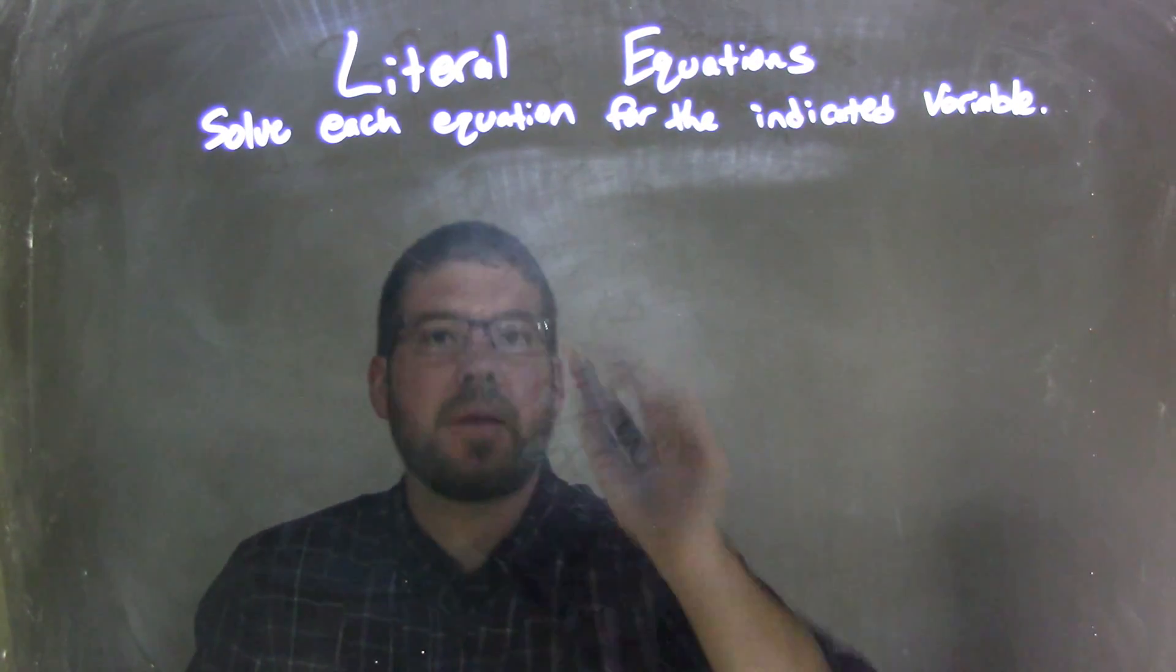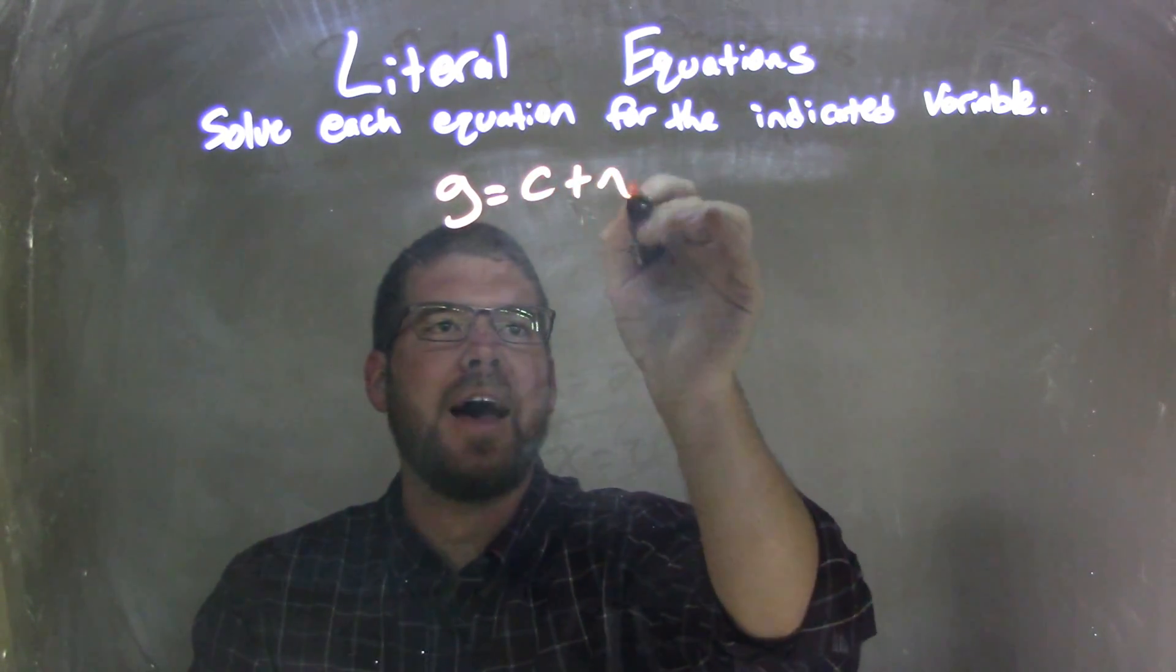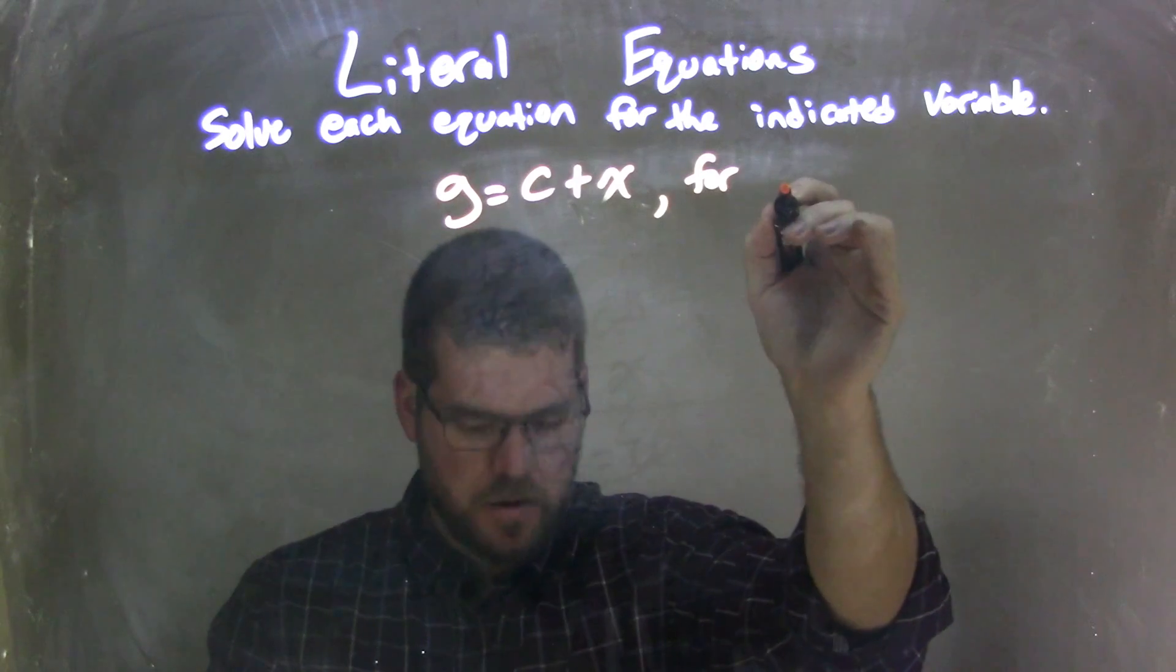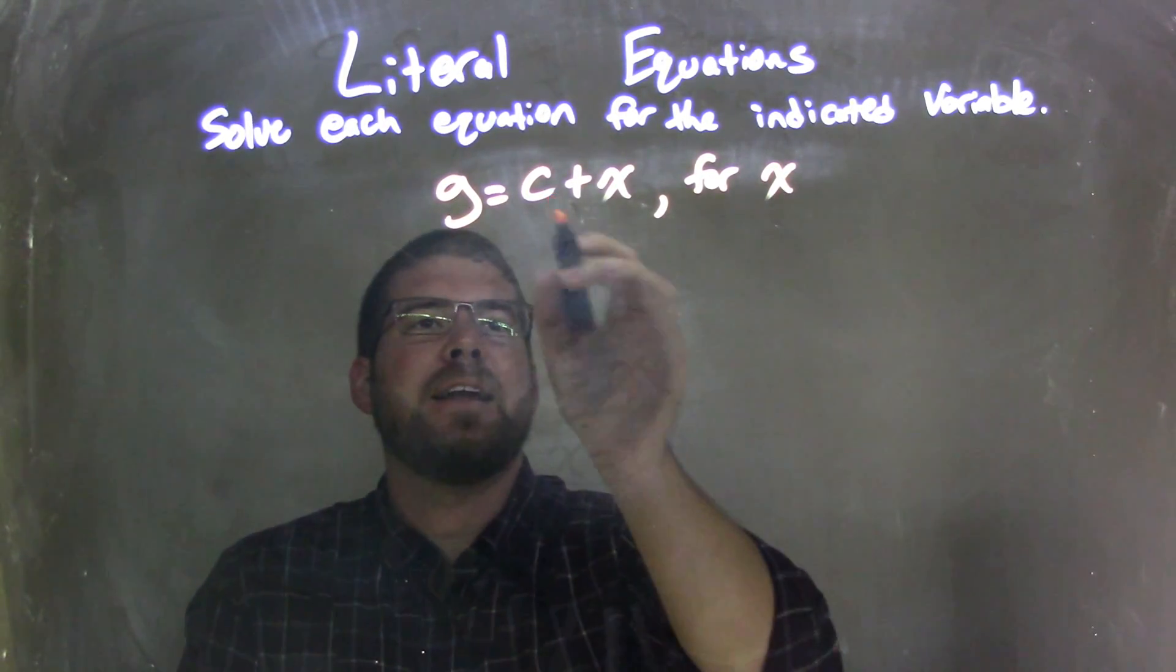So if I was given this equation, g equals c plus x, and we need to solve that for x. So to do that, I need to get x by itself.